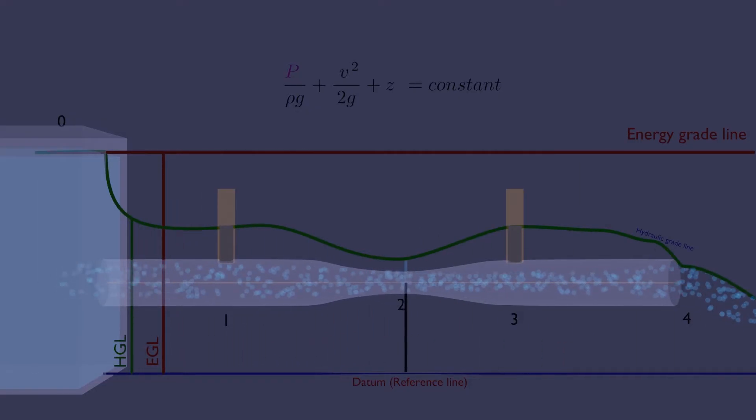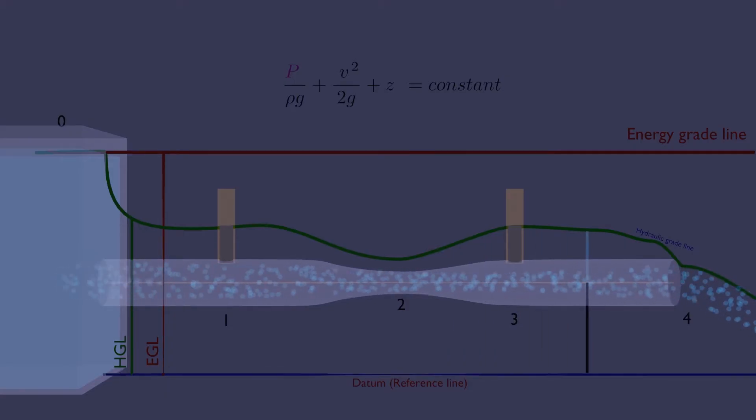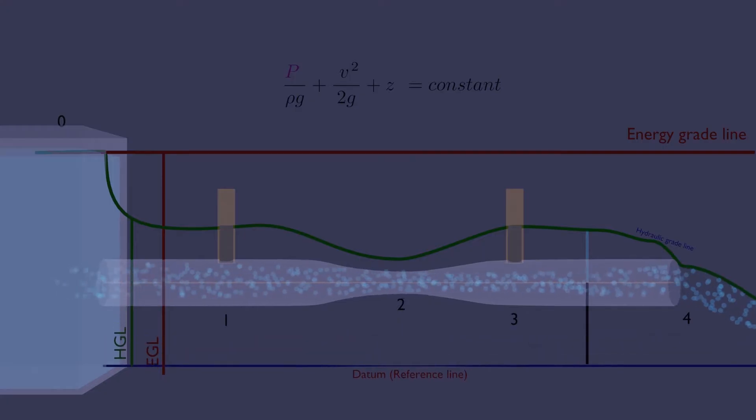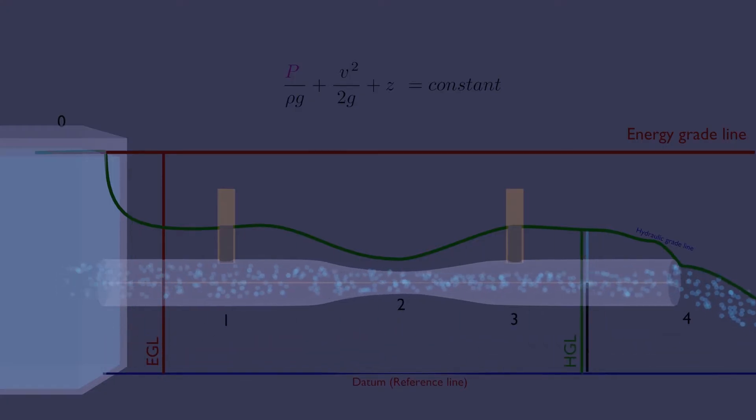The black and blue lines together form the HGL line. Blue line denotes pressure head and black line denotes elevation head, and the sum of these two is HGL. The pink one is the velocity head.